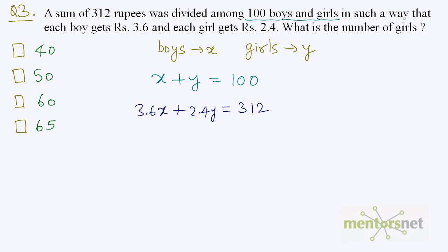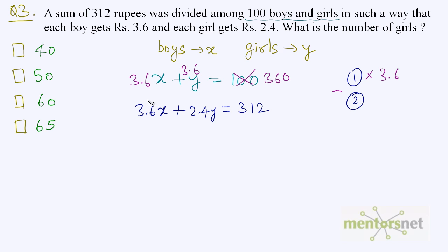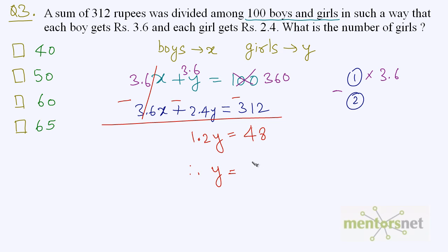This is a case of simultaneous equations — equations 1 and 2 — and we need to solve for x and y. To eliminate x, multiply equation 1 by 3.6: this gives 3.6x plus 3.6y equals 360. Subtracting equation 2, 3.6x minus 3.6x is zero, and 3.6y minus 2.4y is 1.2y, equal to 360 minus 312 which is 48. Therefore y equals 48 by 1.2, which is 480 by 12, equal to 40. So the answer is option A.